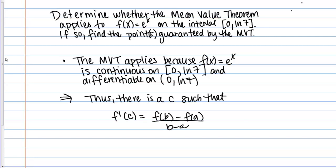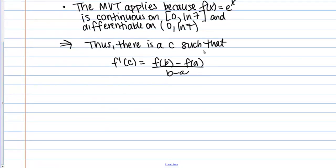Because those criteria are met, I know that there is a C such that this relationship is true and the question wants me to actually calculate what that C is. How do we set about doing that? It's pretty much a plug and chug problem from this point on. I know my interval is from 0 to natural log of 7. 0 is my A and natural log of 7 is my B. I want to plug in those points.